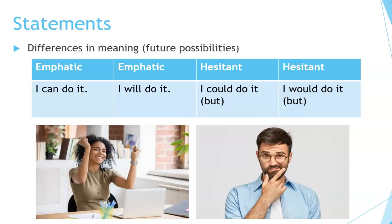Now in statements, there are differences in meaning. Here we're talking about future possibilities and sometimes present possibilities, but mostly future. Can and will are similar: 'I can do it,' 'I will do it.' But could and would are a little bit hesitant: 'I could do it, but I'm busy.' 'I would do it, but I'd rather not.' So can and will are more emphatic, positive, and confident. Could and would in statements are more hesitant and a little bit doubtful.